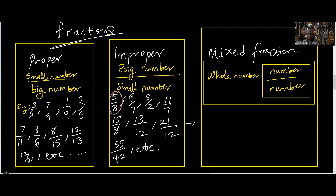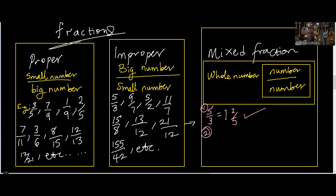Let's pick the first improper fraction: five over three. We're going to say, if I have five fingers, how many times can I remove three from it? Only one time. It's going to remain two. Five over three — you get five fingers and you say how many threes are in five, that's one. Remaining two.